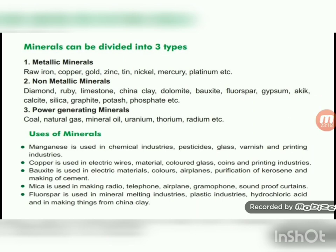Manganese is used in chemical industries, pesticides, glass, varnish, and printing industries. Copper is used in electric wires, colored glass, coins, and printing industries. Bauxite is used in electric materials, colors, airplanes, purification of kerosene, and making of cement. Mica is used in making radio, telephone, aeroplane, gramophone, and soundproof curtains. Phosphor is used in mineral melting industries, plastic industries, hydrochloric industries, and in making china clay products.